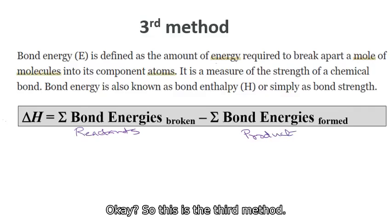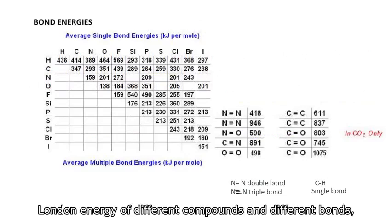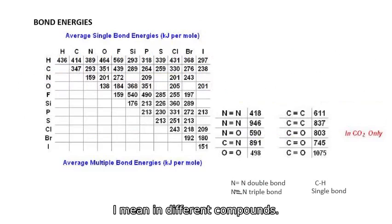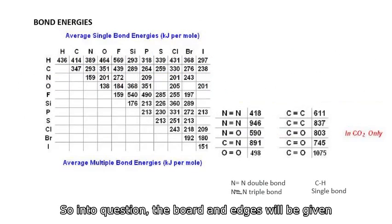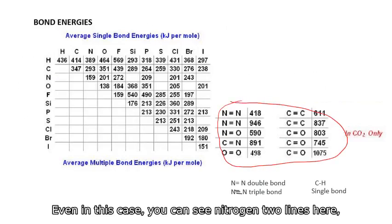Here is an example of bond energy of different compounds and different bonds, I mean, in different compounds. So in the question, the bond energies will be given either in the table form or most probably like this form here.